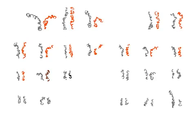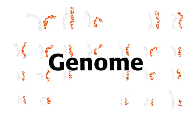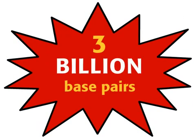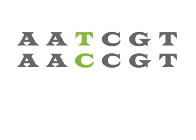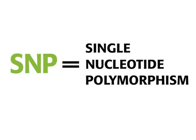An entire set of 23 human chromosomes is called a genome. The human genome is composed of 3 billion base pairs. Variation at a single base pair is called a SNP, or single nucleotide polymorphism.